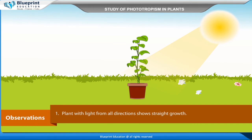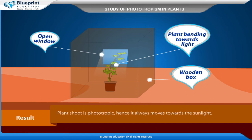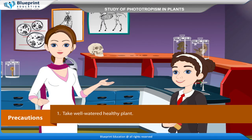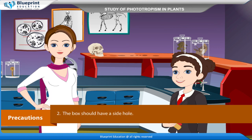Observations: The plant with light from all directions shows straight growth. The plant getting unilateral light shows bending of the shoot towards the source of light, thus showing positive phototropism. Result: The plant shoot is phototropic, hence it always moves towards sunlight. Precautions: Take a well-watered healthy plant; the box should have a side hole; water the plant regularly.